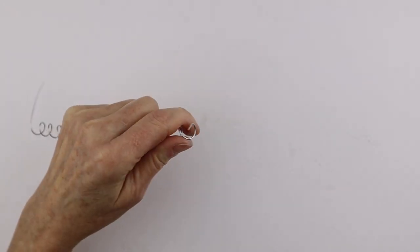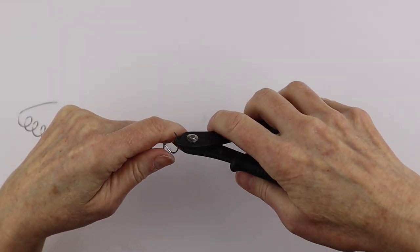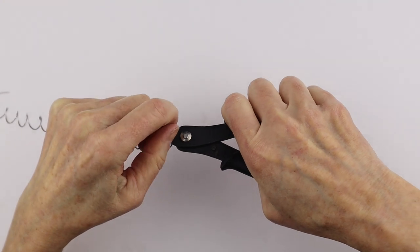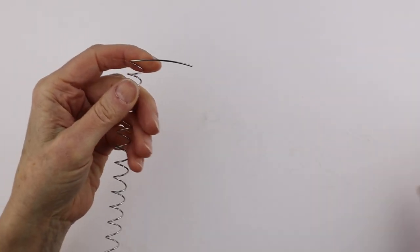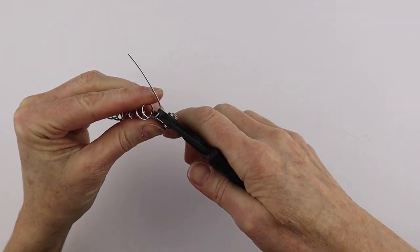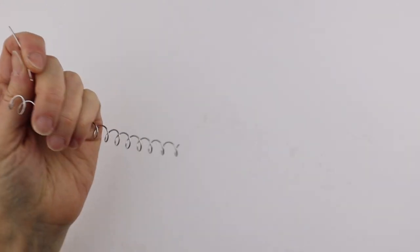Don't worry if it's hard to bend that end in. You want it to be curved, so just take your cutters and cut it like that. You can do the same on the other side. Just cut it there. So there we've got one coil.